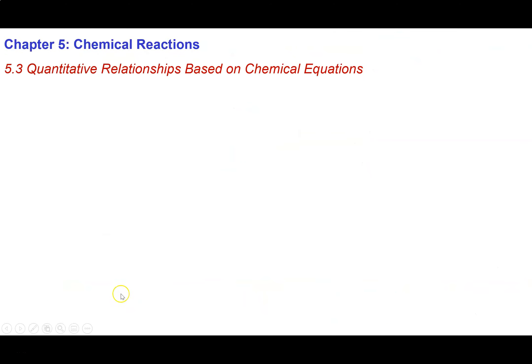That concludes this brief video about how we use the quantitative information contained within either a chemical formula or a balanced chemical equation to do some math and understand the amounts of things being reacted and the amounts of things being produced.